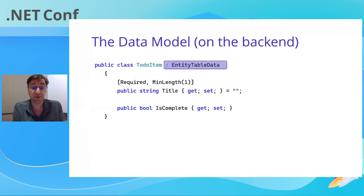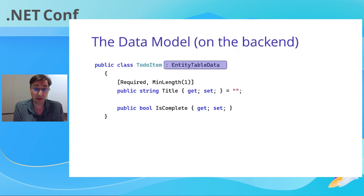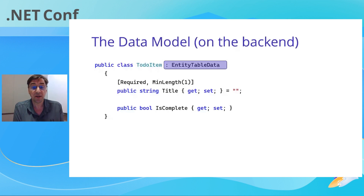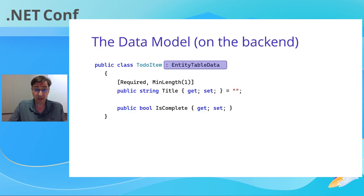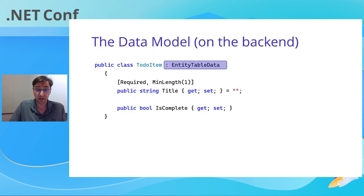Now the data model that you're going to be using needs a bit of augmentation. When you're dealing with synchronizing data from the backend to the frontend, you're going to need some extra information. First of all, the IDs are not going to be numeric anymore — they're going to be globally unique IDs. And secondly, we need to know when the last time that the entity was updated and what the version of that entity was. The entity table data here, which is an implementation of a table data of those three fields, is actually part of the model.